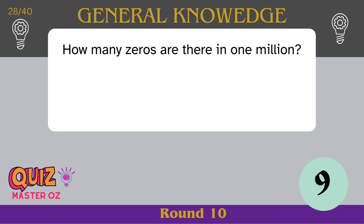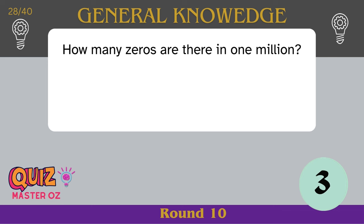How many zeros are there in one million? Six.